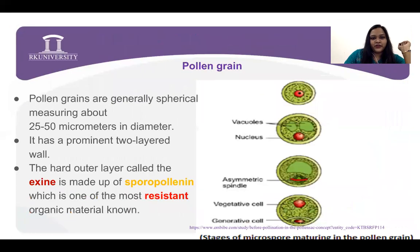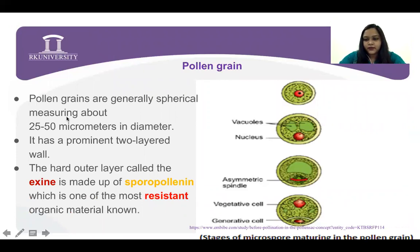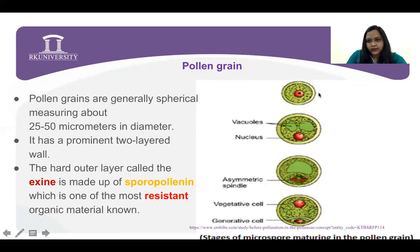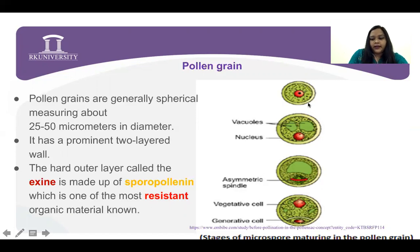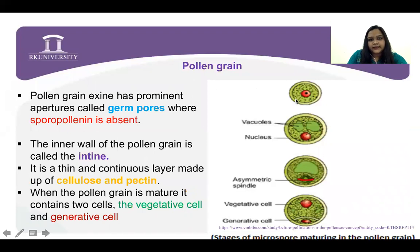So we are moving to the pollen grains. Pollen grains are generally spherical, measuring about 20 to 25 micrometers in diameter. They have a prominent two-layer structure. The outermost layer is called the exine, which is made up of sporopollenin — a most resistant organic material.